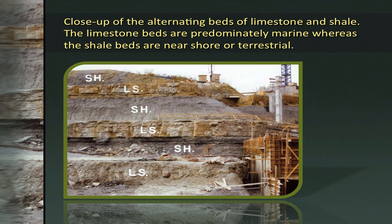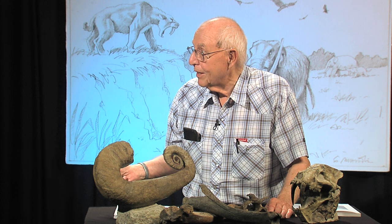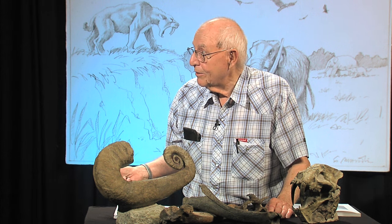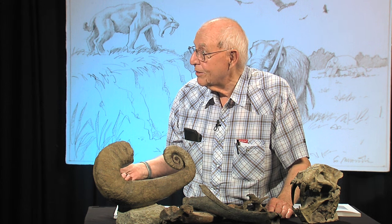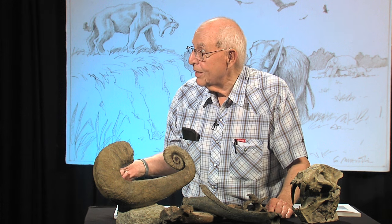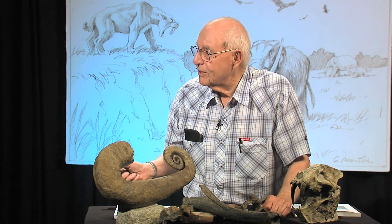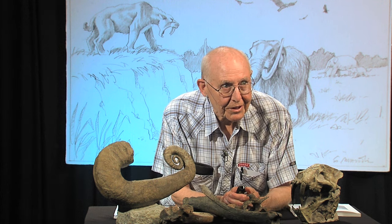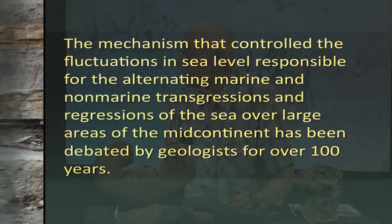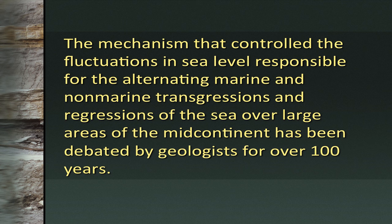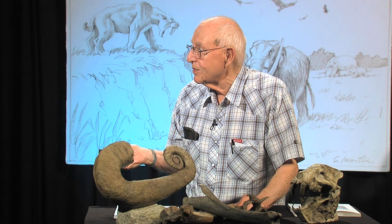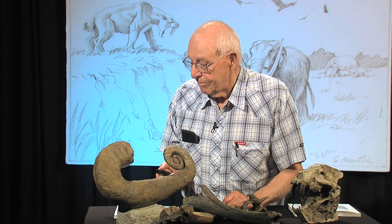Let's get back to the rocks. What we have is limestone and shale alternating. This particular bed had a little coal bed — these all have names. This would be the Westerville, and this the Cement City, and this would be the Cuvera Shale. The limestone and shale alternate through hundreds of feet of section. In Missouri, there's at least 2,000 feet of section with this alternation of limestone and shale. What caused that? There has to be a theory — this just didn't happen. The mechanism that controlled the fluctuation of sea level responsible for the alternating marine and non-marine transgressions and regressions of seas over large areas has been debated by geologists for a hundred years, but we do have some major theories.